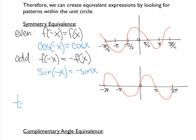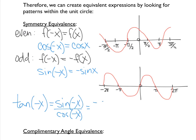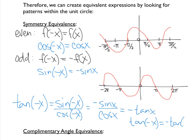Now let's look at tangent. Tan of negative x — if we plug in a negative value, we know that's sine over cos. Since sine is an odd function, it becomes negative sine x over cos x, and cosine is an even function so it stays itself. That gives you negative tan x, which makes tangent an odd function as well. So tan of negative x equals negative tan x. And if we think about the graph, it makes sense that it's odd, since there is symmetry about the y equals x axis.